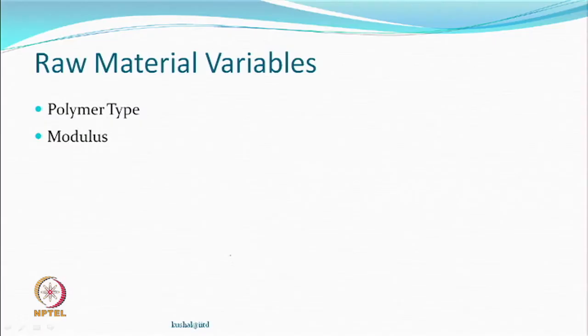The modulus, determined by chemistry or pre-texturing conditions, is related to bending rigidity. A material with a higher modulus versus a lower modulus will give different characteristics of the textured yarn edge. This was not fully understood initially, which led to difficulties in producing good yarn.